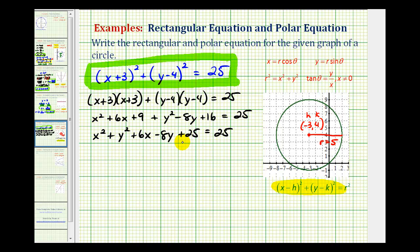We'll notice how if we subtract 25 on both sides of the equation, these would simplify to zero. So now we have x squared plus y squared plus six x minus eight y is equal to zero.